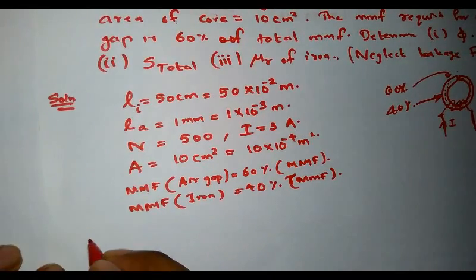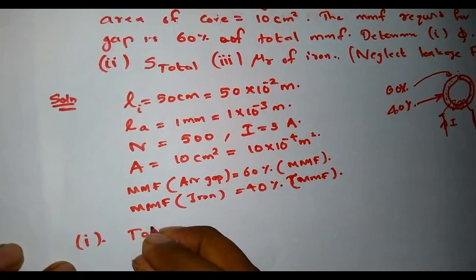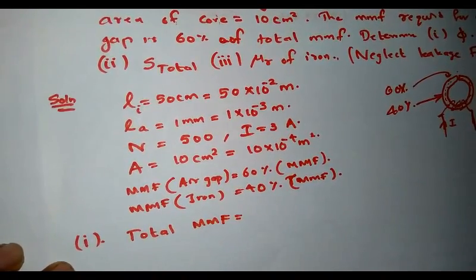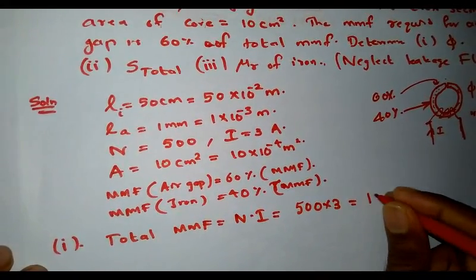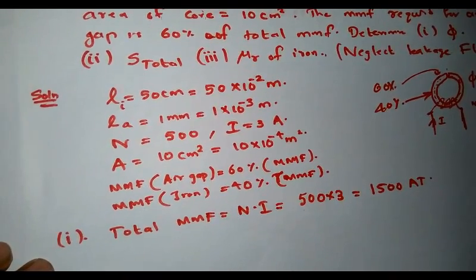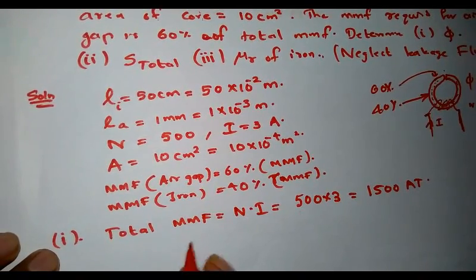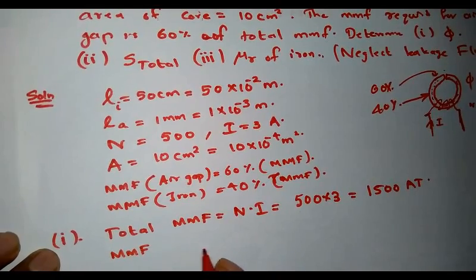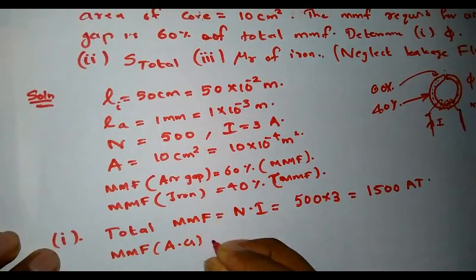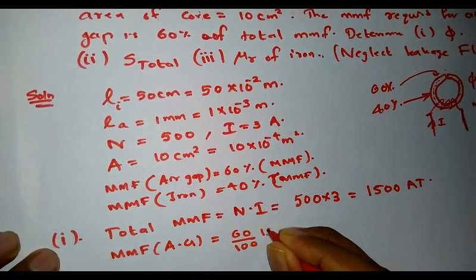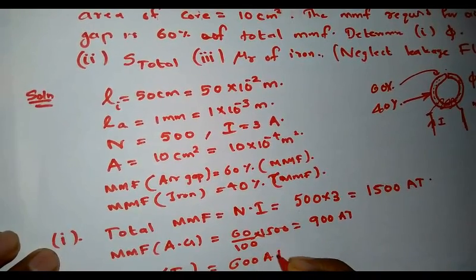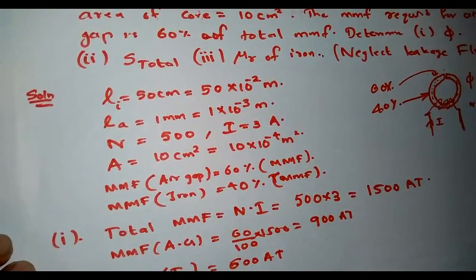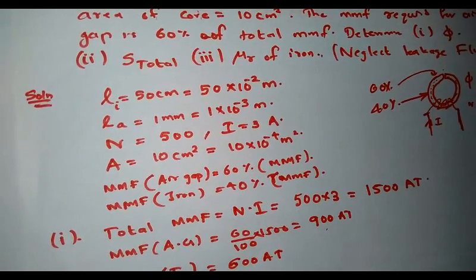Let us go through the first two parts — determining the flux phi and the total reluctance. The total MMF provided by the current-carrying coil of 500 turns is: total MMF = N × I = 500 × 3 = 1500 ampere turns. MMF required in the air gap = 60% of 1500 = 900 ampere turns. MMF required in the iron part = 40% of 1500 = 600 ampere turns. So 600 ampere turns is used in the iron part and 900 ampere turns in the air gap for setting up flux.